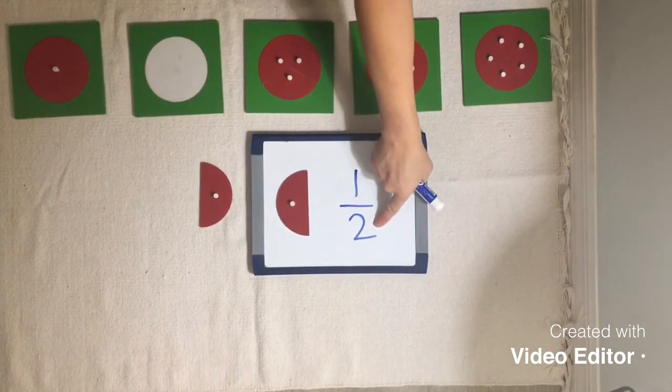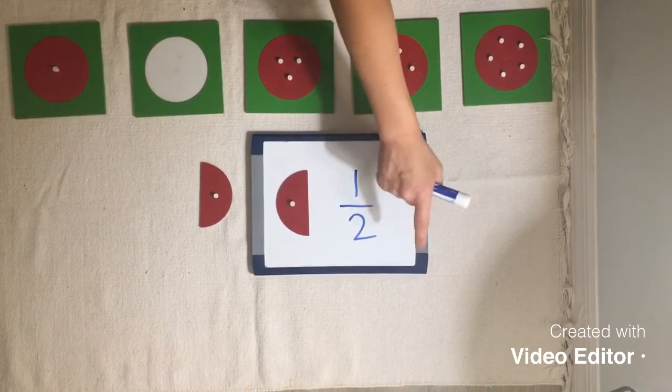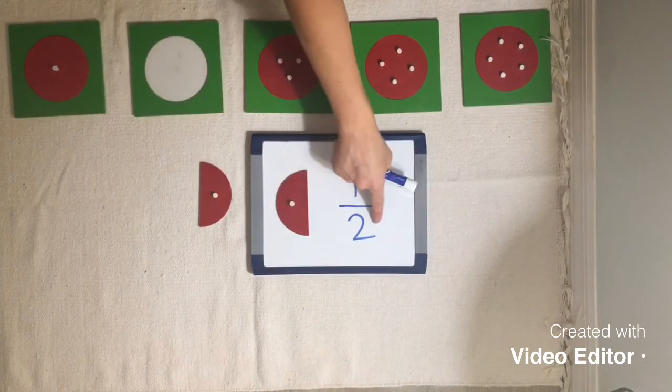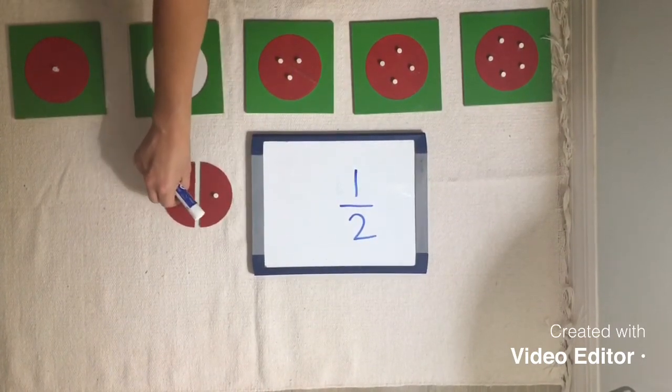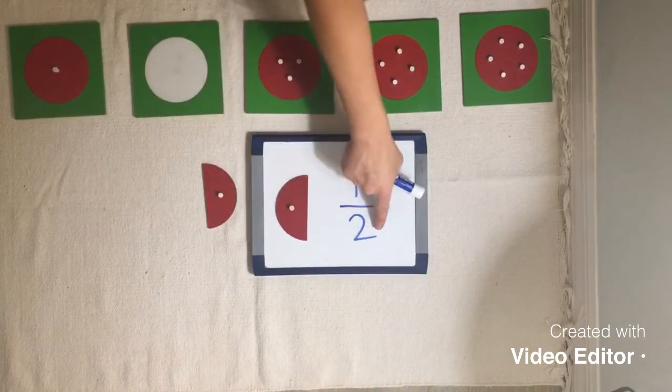The number on the bottom of this fraction is called the denominator. And it tells you the total number of parts that the whole has been divided into. So there is a two there because this circle has been divided into two parts. So the denominator is two.